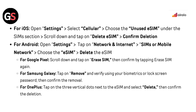For iOS, open Settings, select Cellular, and choose the unused eSIM under the SIM section. Scroll down and tap Delete SIM, then confirm deletion. For Android, open Settings, tap on Network and Internet, then SIM or Mobile Network. Choose the eSIM you want to remove and delete it.